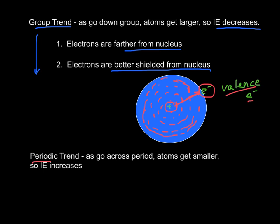The periodic trend - as we go across a period, atoms get smaller, so ionization energy gets bigger. As we go down, ionization energy decreases, and as we go across, ionization energy increases. It does the opposite of what the atomic size does.